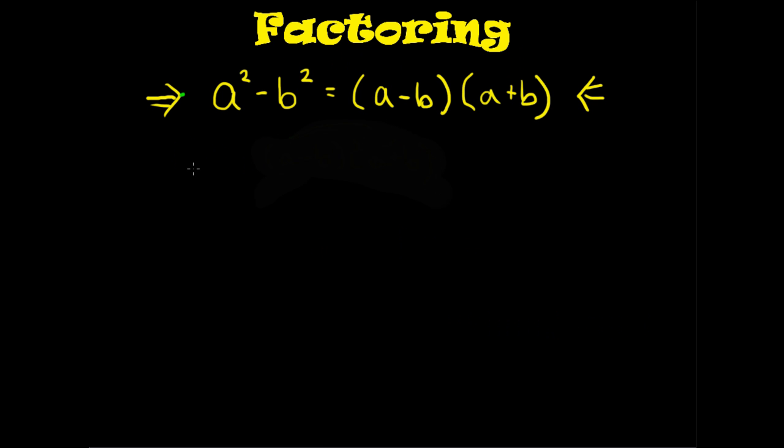Welcome. Today we will talk about factoring and the difference of two squares. So this is the definition here of the difference of two squares. It's a squared minus b squared, which factors into the quantity of a minus b, times a plus b.